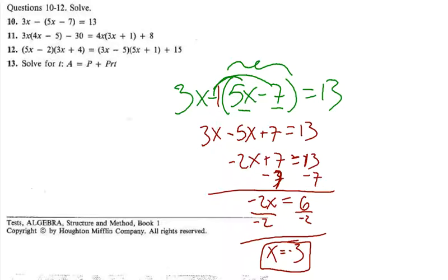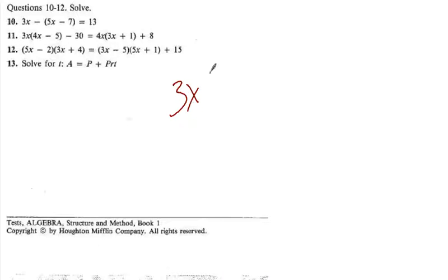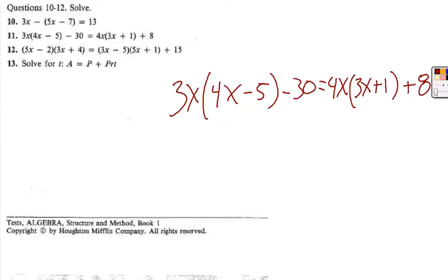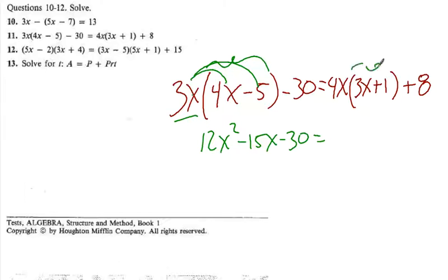Alright, number 11. We have 3x times 4x minus 5 minus 30 is equal to 4x times 3x plus 1 plus 8. The first thing we're going to do here is recognize that a monomial that's placed right next to a binomial means that we're multiplying this monomial to both things, both terms inside the binomial. So 3x times 4x is 12x squared. 3x times negative 5 is going to be negative 15x. We still have the minus 30, which is equal to, and we have the same condition here, where we have a monomial that's being multiplied by a binomial.